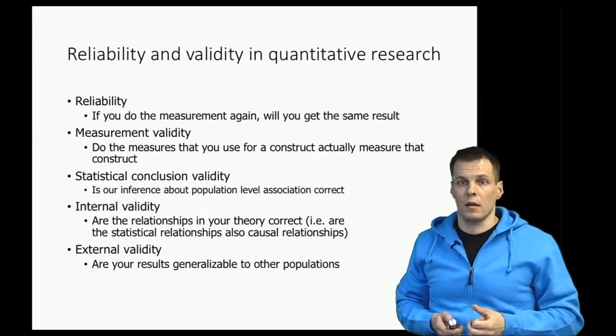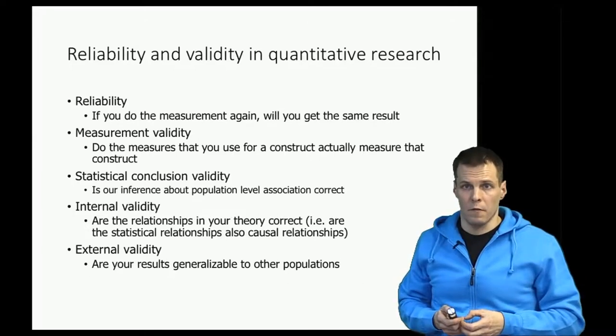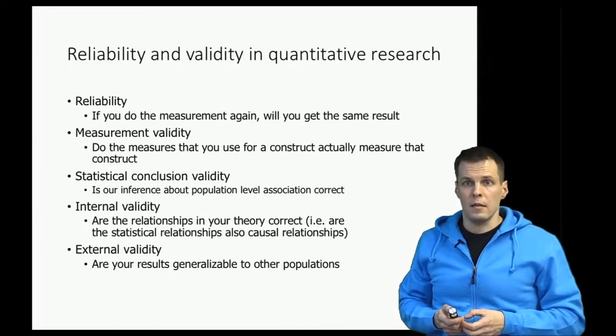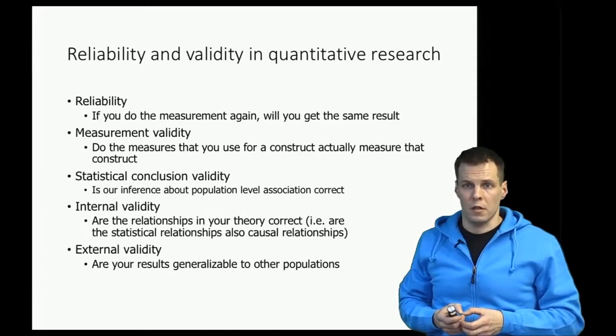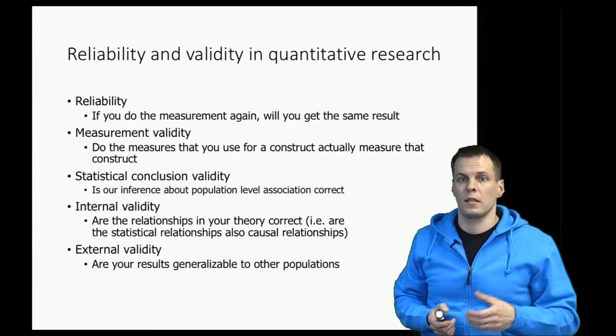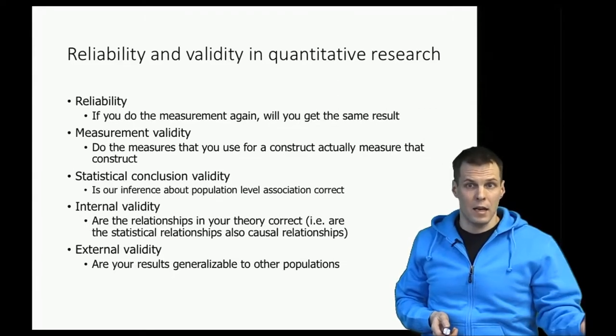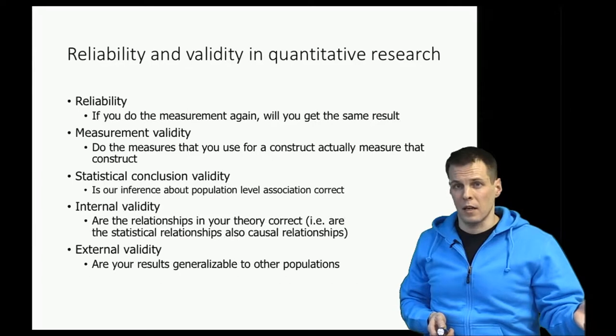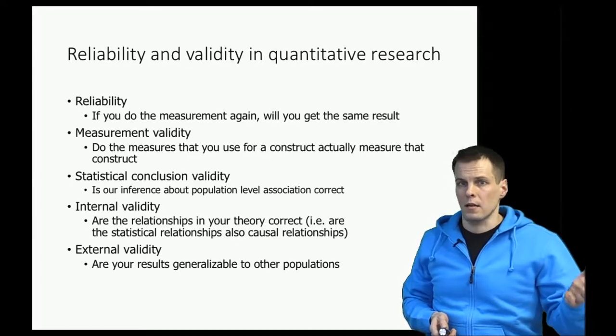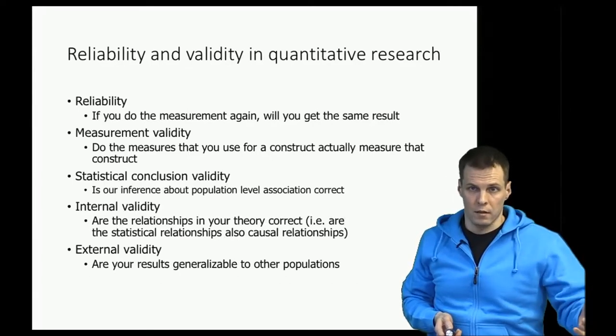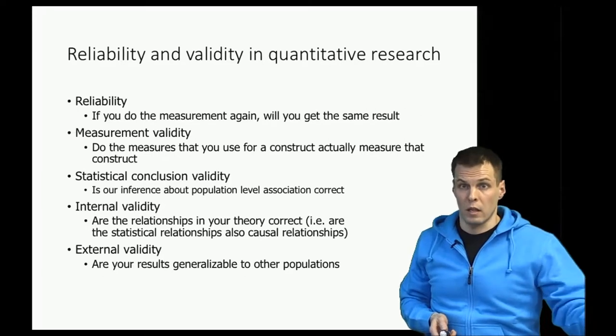Validity, on the other hand, answers the question of does the study answer the question that it's supposed to answer correctly. So does it provide a correct answer? Reliability is about do we get the same answer if we repeat the same study. Reliability doesn't tell us anything about whether the result is correct. Validity tells us whether the result is correct.